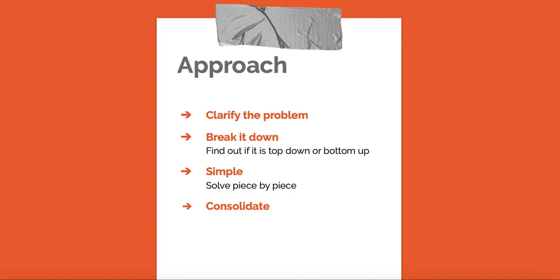The second and most important step is to break down the problem. There are two ways: top-down and bottom-up. Top-down means you assume the population of a city or country and then break it down — for example, by age, gender, income groups, or professions. Once you break it down, you solve for the relevant part. For instance, if your target audience uses men's fairness cream aged 20 to 65, you only focus on the men's segment.